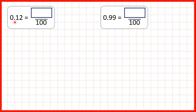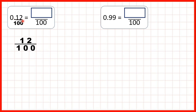Now we have 0.12. So we know that the first digit after the decimal point tells us how many tenths we have, and the second digit after the decimal point tells us how many hundredths we have. But our answer isn't two hundredths because we can change the one tenth into hundredths as well. 0.12 is actually 12 hundredths. If we see a number with two decimal places, we can draw a line across from the decimal point and write a denominator of 100, because the second digit after the decimal point has a hundredths place value.